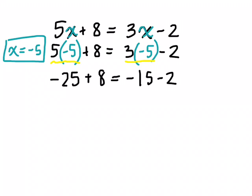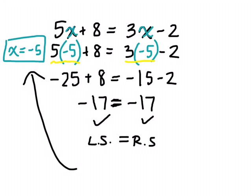We can still simplify this. Negative 25 plus 8 is negative 17. And negative 15 minus 2 is also negative 17. Both sides of the equation are the same, and they should be because there's an equal sign in the middle, so it's balanced. The left side is equal to the right side. So therefore, our solution, which was what we had to solve for, has to be correct because it balanced the equation.